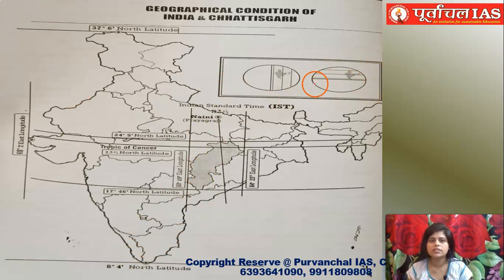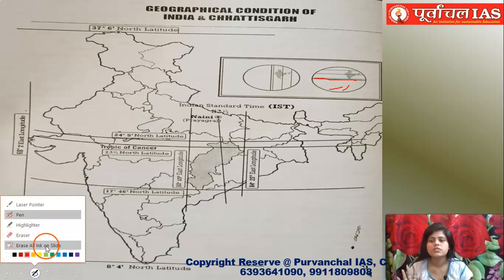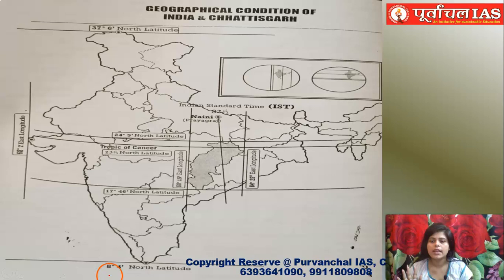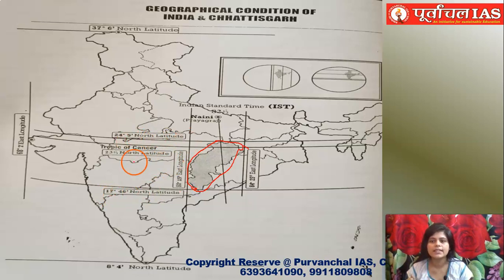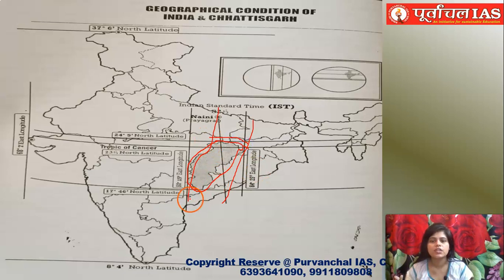Looking at the map — this is India, located in the northern hemisphere. The equator is the imaginary dividing line, and India is not in the southern hemisphere. India starts at about 8° north. Here you can see the location of Chhattisgarh. The latitude range is 17°46'N to 24°5'N and the longitude range is 80°15'E to 84°25'E, which defines its exact location.